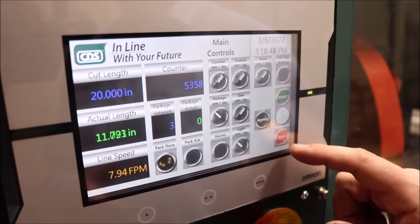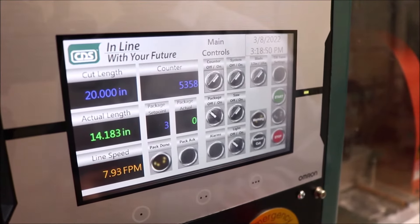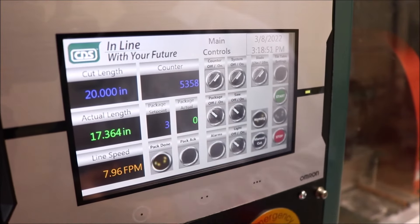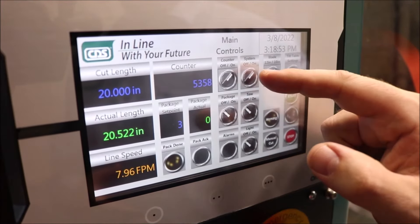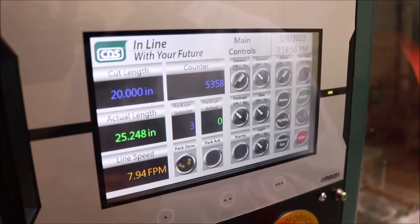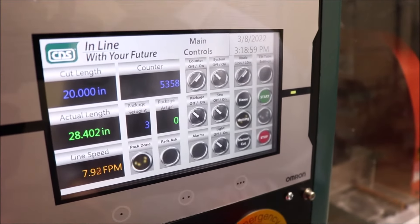To stop the machine, we will press the stop button. We will stop the saw and we will stop the system. And now your machine is stopped.